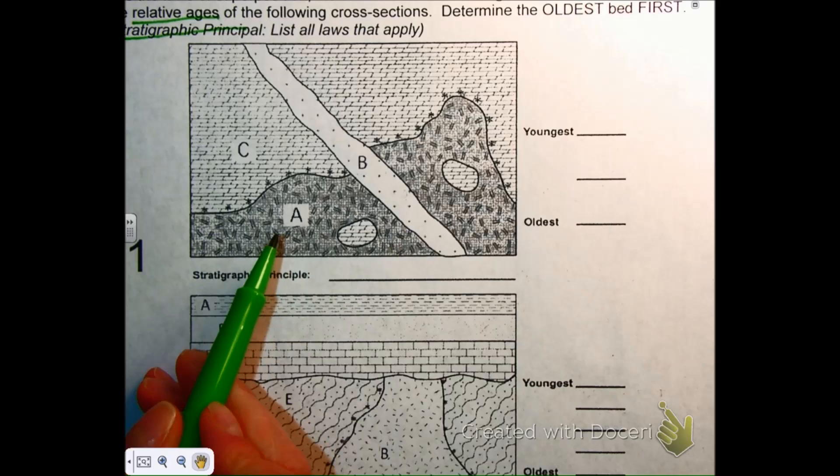Okay, handful of people there. Anybody want to suggest B or C as an older layer? Okay. Surya, why? Which one and why?